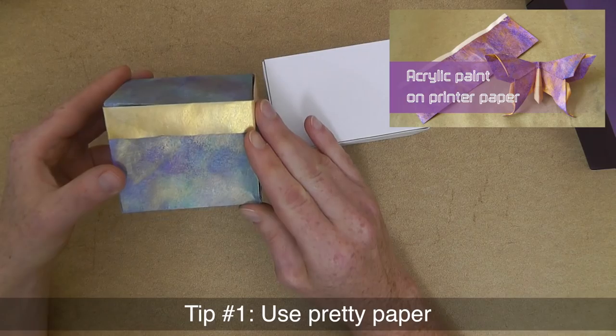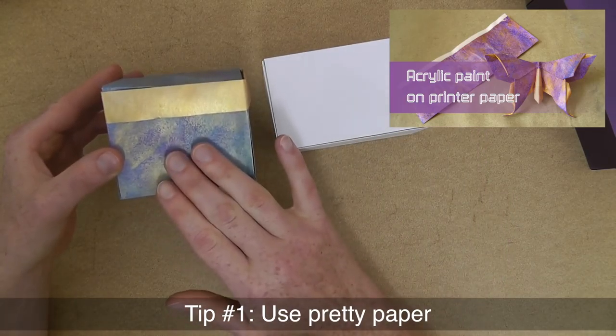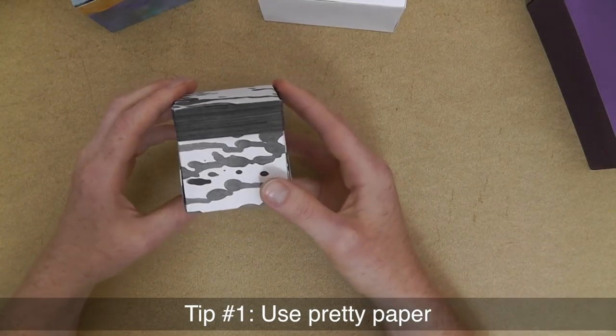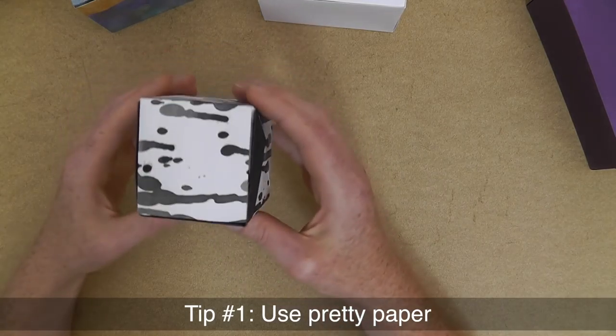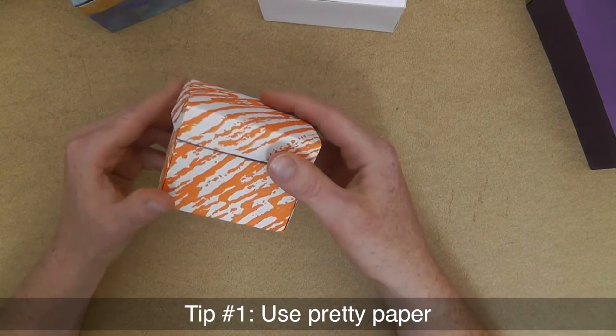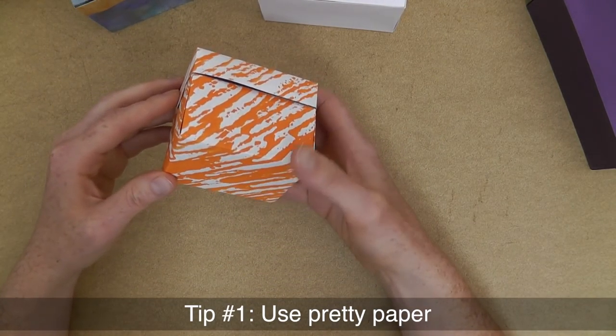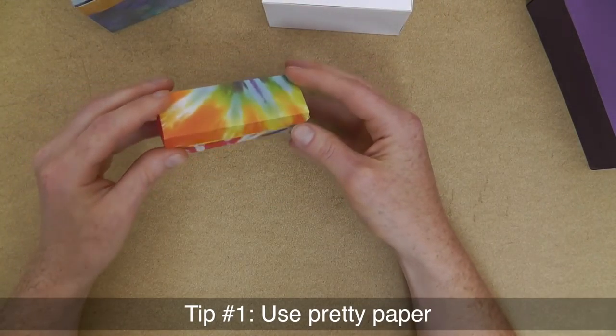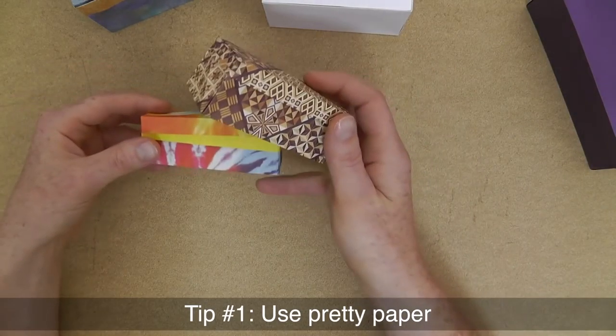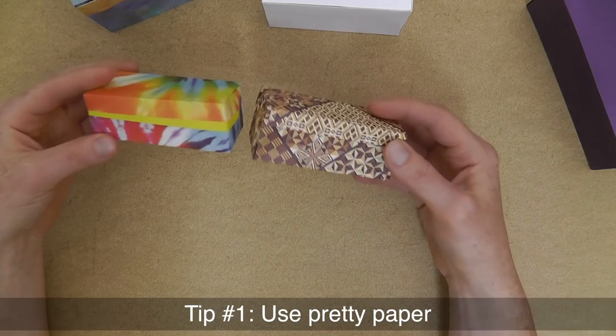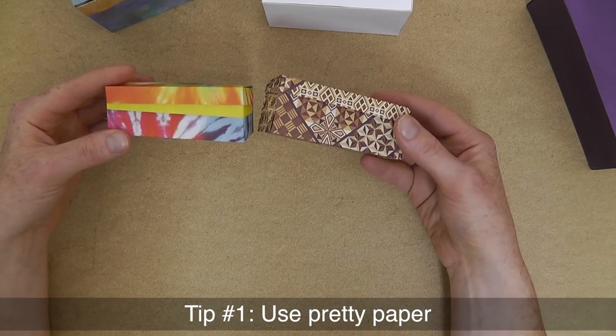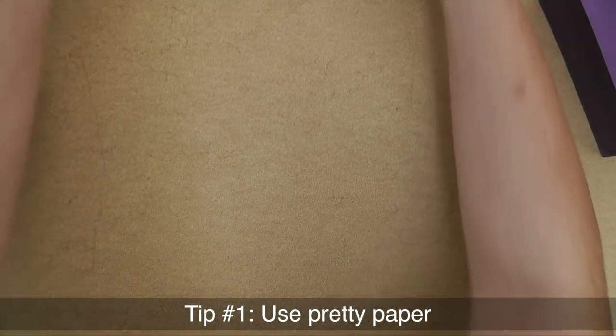And this is printer paper too, but I painted it with acrylics before, and I've even got a video on one method on how to do that. But of course you could also use other ideas, like these paint splatters—ink actually—on some printer paper, or this orange on also printer paper, so you really don't need much. Of course, there's also pattern paper available that's readily made. For example, these patterns really make the box very different and give them a special feel so that you can customize it to the taste of the person that you might want to give it to. So that's tip number one: use pretty paper.